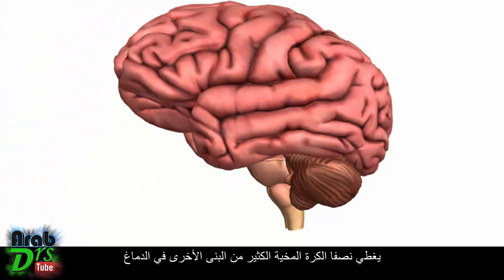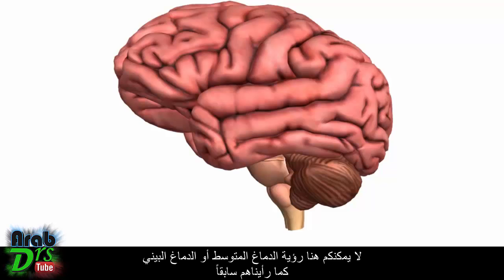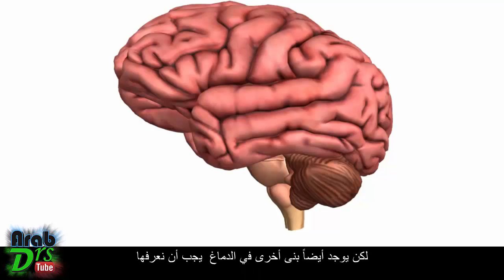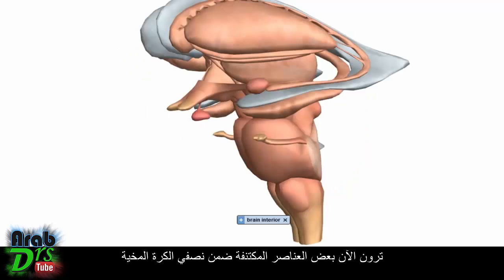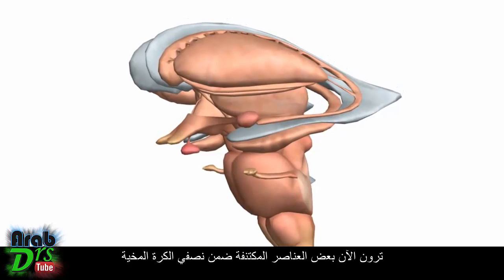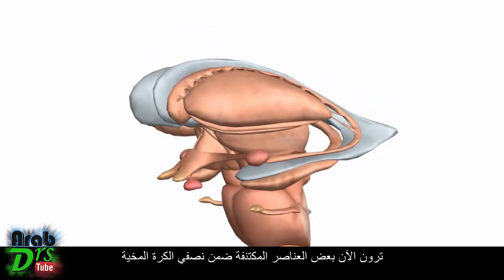The cerebral hemispheres cover a lot of other stuff contained within the brain. You can't see the midbrain or the diencephalon here, but there are other structures in the brain which we need to know about. So I'll just remove the cerebral hemispheres. What we're looking at now is some of the stuff that's contained within the hemispheres.